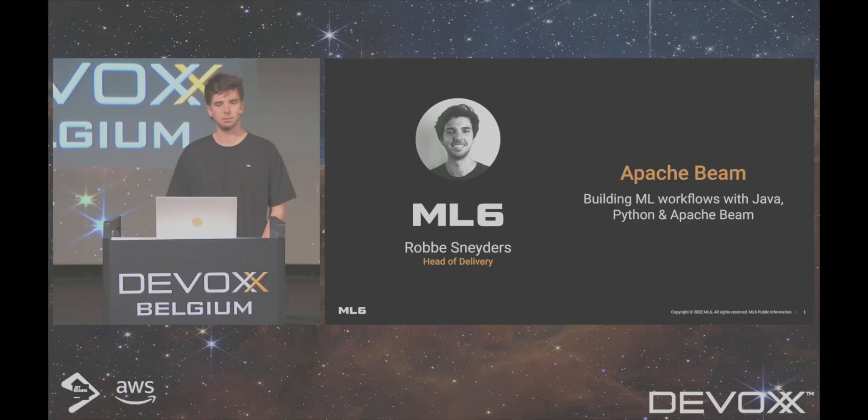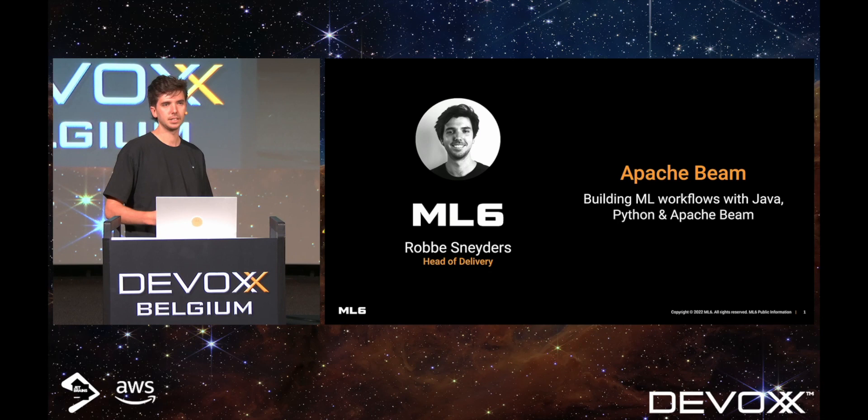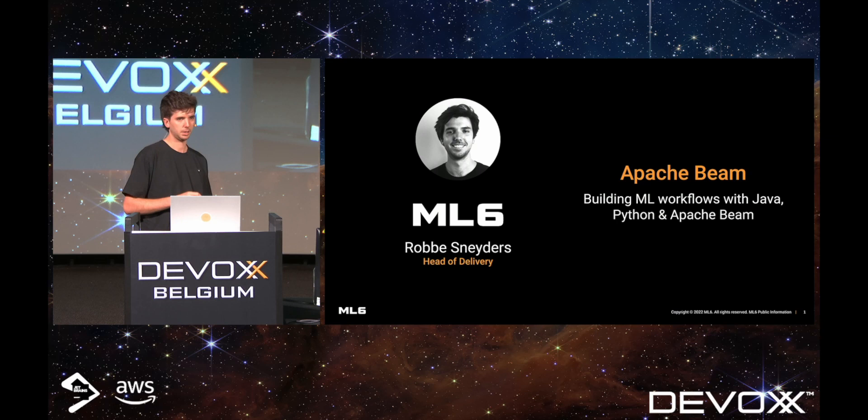Hi everyone, my name is Robbe Sneders. I'm head of delivery at ML6, which is a machine learning consultancy company, which means that we build end-to-end solutions for clients using machine learning. Today I'll be talking about Apache Beam, specifically how we can use it to build machine learning workflows, combining Java and Python.